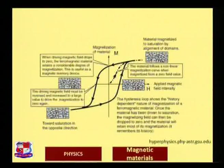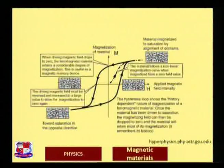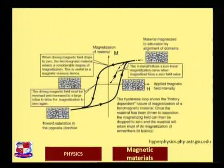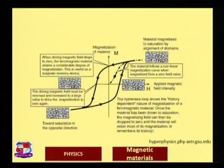At this point the material can be used as a memory device since it remembers which field was applied to it. Moving back to the graph, if we decrease H to a certain point Hc — the coercivity — B becomes zero, meaning the internal flux density is zero and there is again random orientation of the magnetic moments.